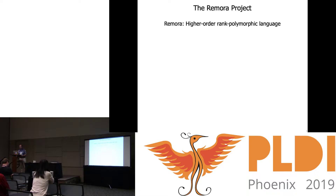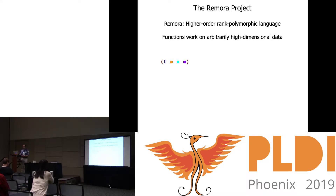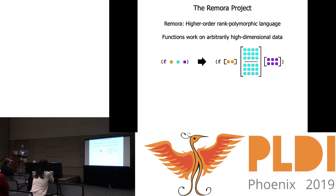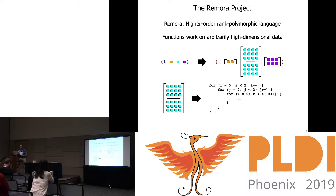It's a higher-order language, which is not a particularly out-there kind of idea. Rank polymorphism is the rule that functions automatically work on arbitrarily high-dimensional data. So if we have F applied to data like this, it means we can also have it applied to larger dimensional arrays. This works because each array contributes implicitly its own control structure based on the shape of the array itself.